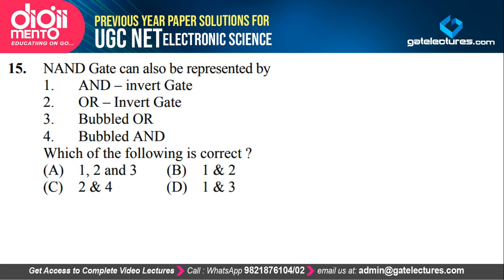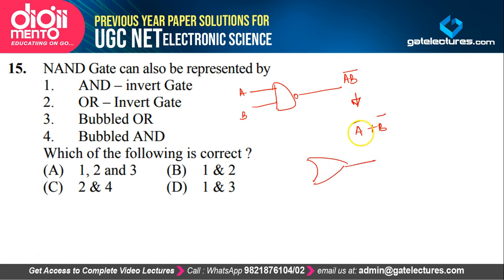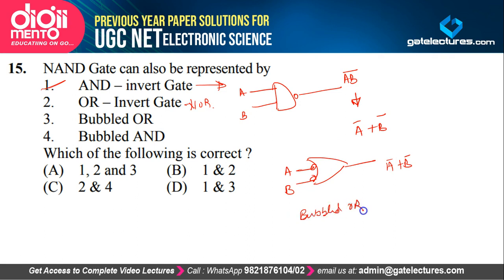A NAND gate expression is AB̄ (A AND B, whole bar). Using De Morgan's law, AB̄ = Ā + B̄, which represents OR with inverted inputs. NAND can be represented by AND-INVERT, or by a bubbled OR gate (inversions at the inputs, not the output). OR-INVERT gives a NOR gate, not NAND. So both options 1 (AND-invert) and 3 (bubbled OR) represent NAND, making the correct answer option D.